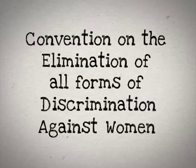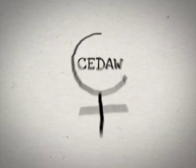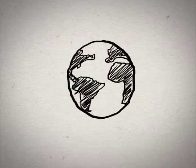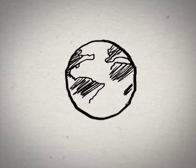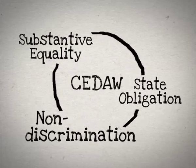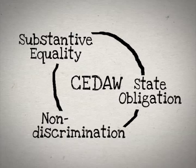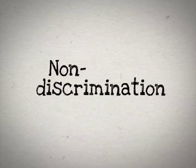The Convention on the Elimination of All Forms of Discrimination Against Women is an international human rights treaty that focuses on women's rights and women's issues worldwide. It follows three principles: substantive equality, non-discrimination, and state obligation. This video explains the principle of non-discrimination.